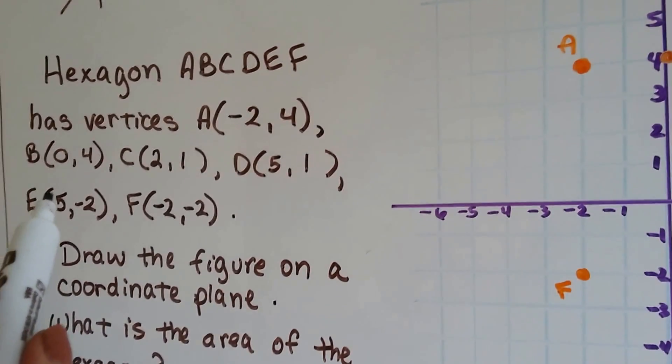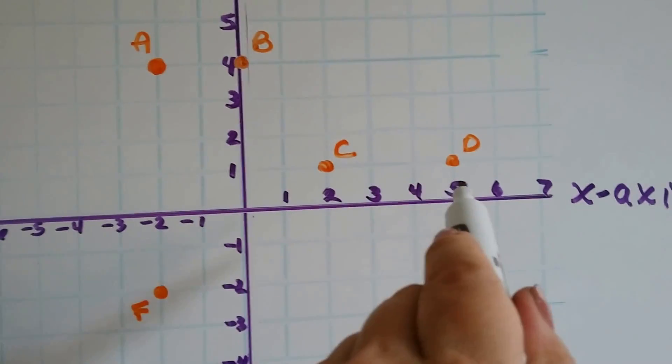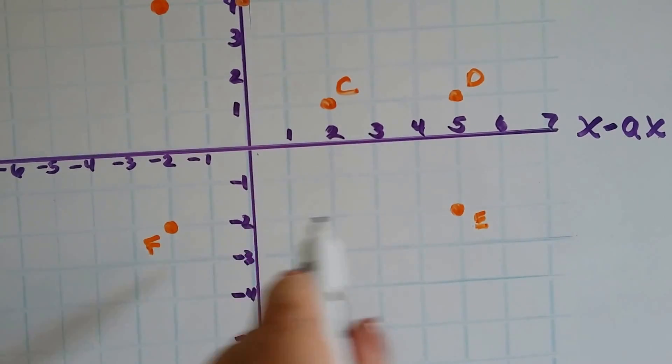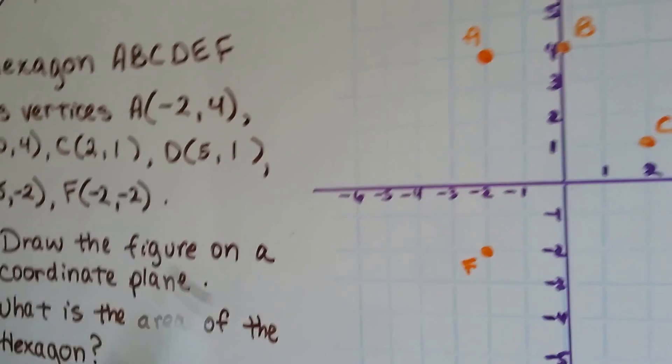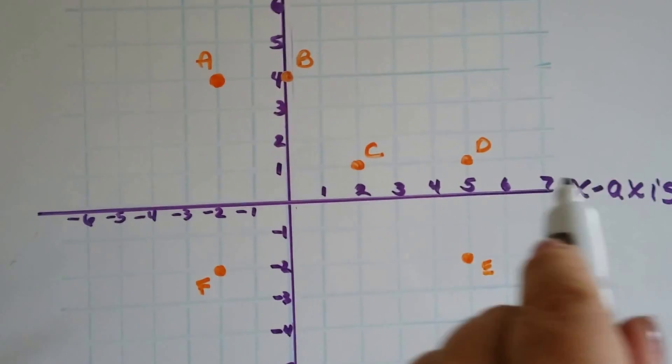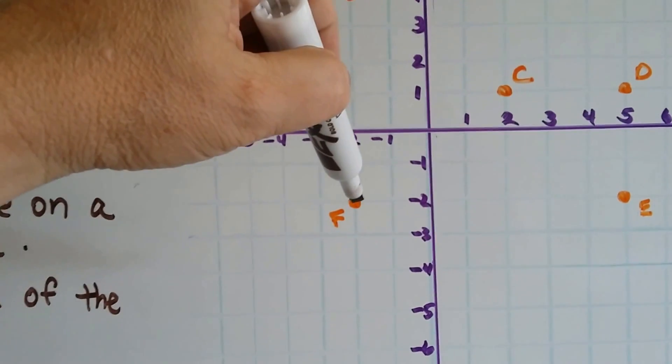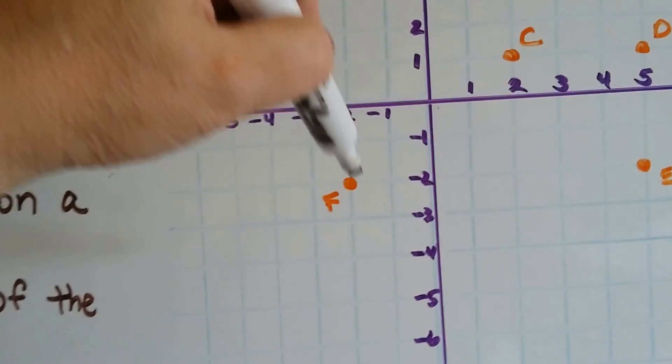E is (5, -2), so we find 5 on the x-axis right here, and then we go down to -2 for the y-axis. So, E is right here, and then F is (-2, -2). So, on the x-axis, we find -2, there it is, and then we go down to -2 for the y, and where those two points meet at that intersection is F.